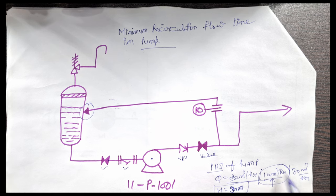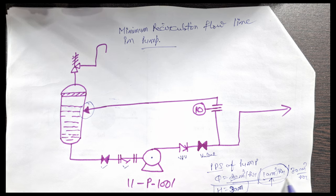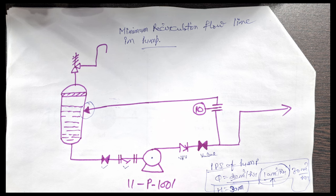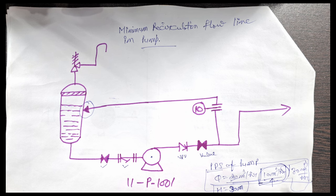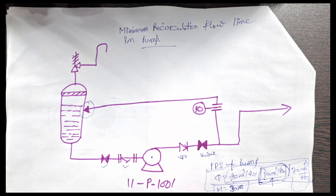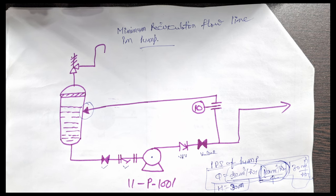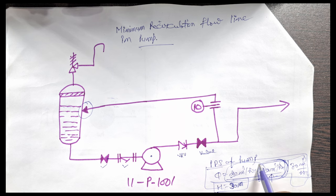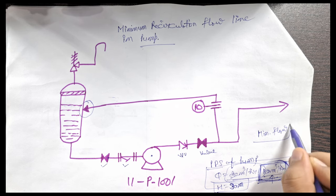Now the question is: what will happen if your pump goes below 10 cubic meters per hour? Simply, your pump could be damaged — the pump internal parts could be damaged — because it is designed within this range. When you look at the pump curve, the vendor provides a range from minimum flow to maximum flow, including the normal flow. If you go below the minimum flow point, the pump internals could be damaged.